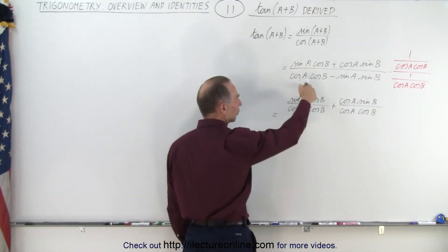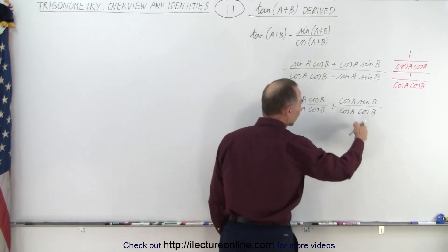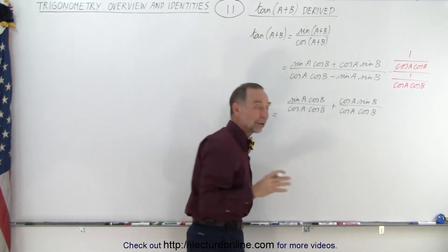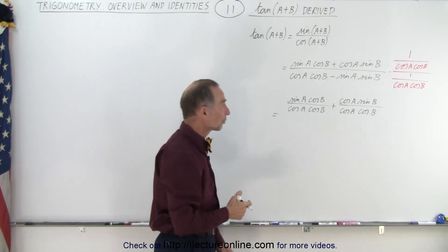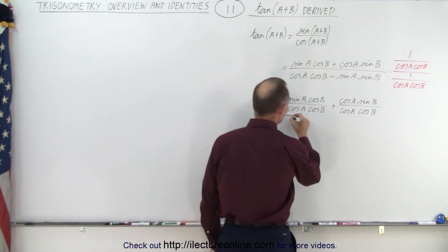Because notice that the cosine of B will cancel out here. The cosine of A will cancel out. What you're trying to do is you're going to get rid of the cosine functions in this equation.